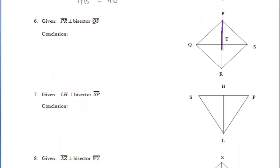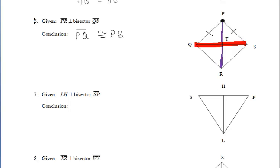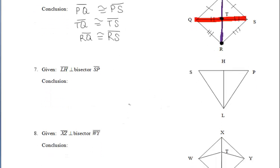Let's try another one. We have our perpendicular bisector PR highlighted in purple, bisecting segment QS in red. Point P lies on the perpendicular bisector, so P is equidistant from Q and S, meaning segment PQ is congruent to segment PS. T is another point on the perpendicular bisector, so T is equidistant from Q and S, making segment QT congruent to segment TS. Finally, R lies on the perpendicular bisector, so RQ and RS are congruent.